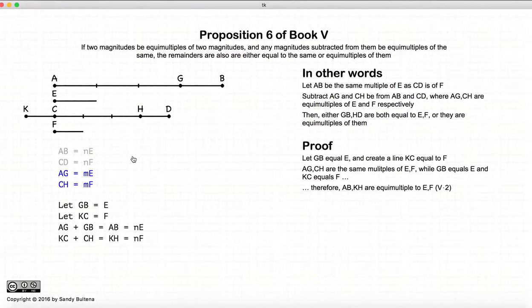Now if you remember Proposition 2, if you have two lines that are multiples of one line and another two lines that are multiples of F, if you add them together, they will also be equal multiples of E and F.